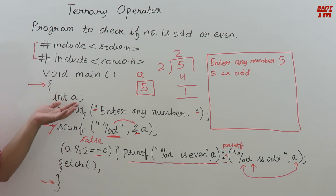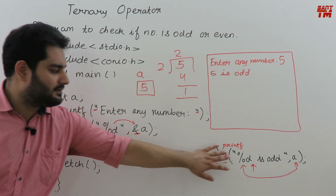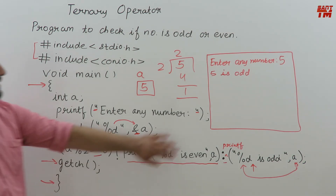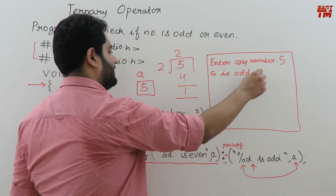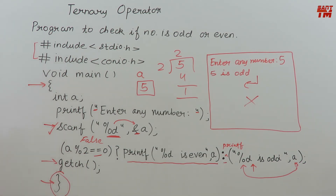Please run this program on your PC to get hands-on practice with the conditional operator. Whenever expression one is false, expression three executes; whenever it is true, expression two executes — this is the core concept of the conditional operator. The getch() call makes the program wait for you to press enter before closing the console. The code for this program will be in the video description.